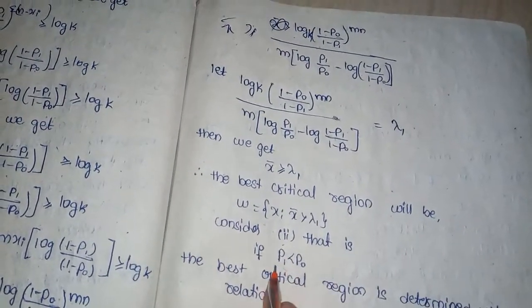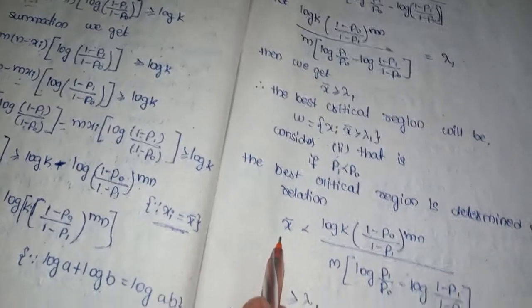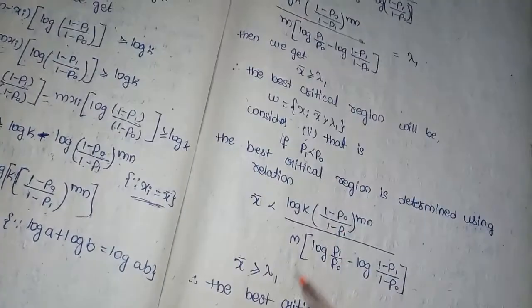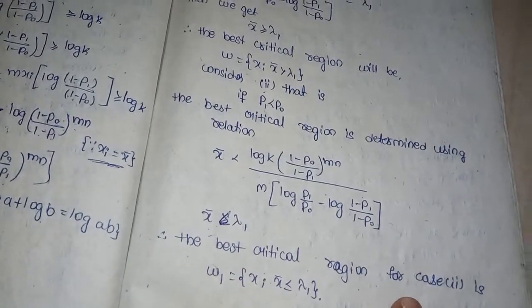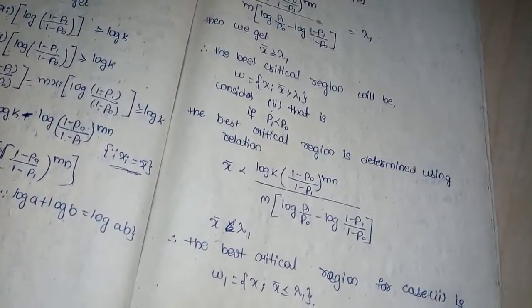Case 2: Taking P1 < P0. In this case, dividing by a negative log term reverses the inequality, so the best critical region is determined by x̄ < lambda_1. Therefore the best critical region for Case 2 is W1 = {x : x̄ <= lambda_1}.